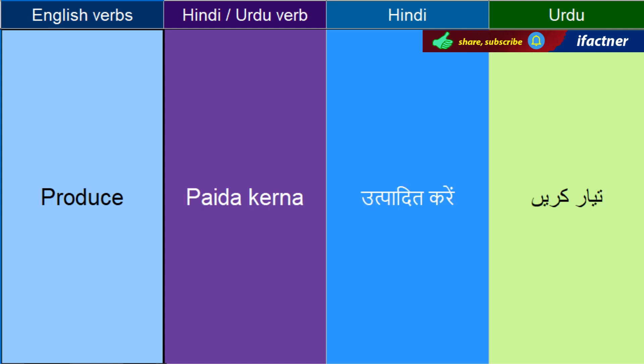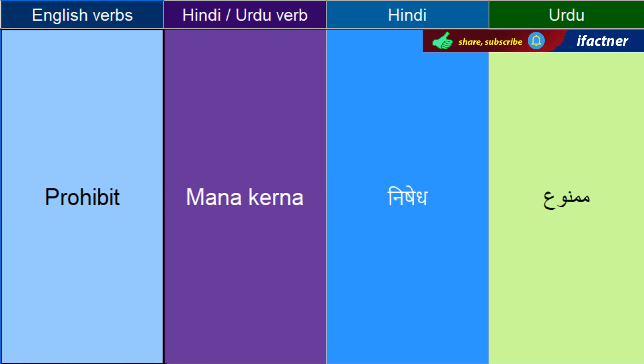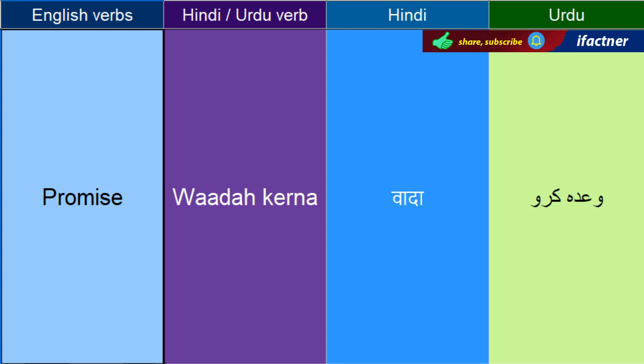Paida kerne ko kehengay — Produce. Terakki kerne ko kehthay hain — Progress. Mana kerna — Prohibit. Jissa mamnoo hai, jissa sigrat noshi mamnoo hai. Waada kerna — Promise. Promise me that you will never leave me — mujh seh waada kero ki tum mujhye kubhi nahin chhodo gay.